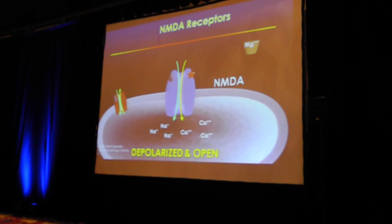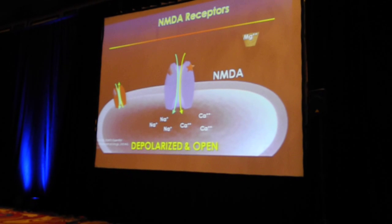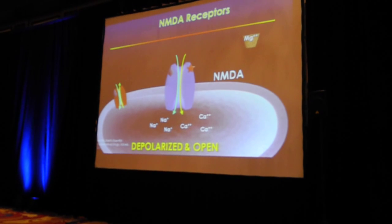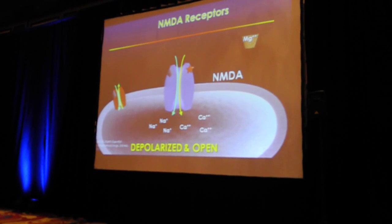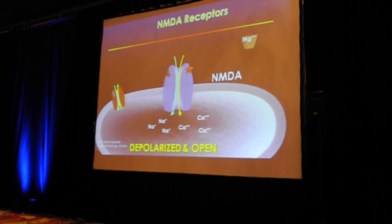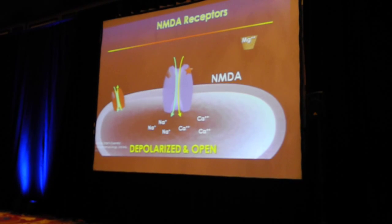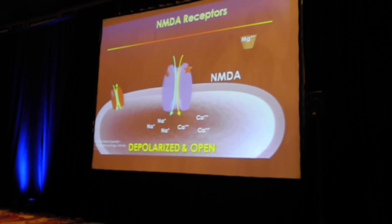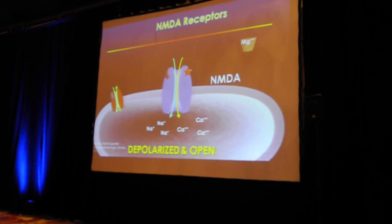It kind of all fits in with the loss of brain tissue with psychosis. This receptor actually handles a lot of neuroplastic events in the brain. So it kind of makes a nice, cohesive, overarching theory for schizophrenia.